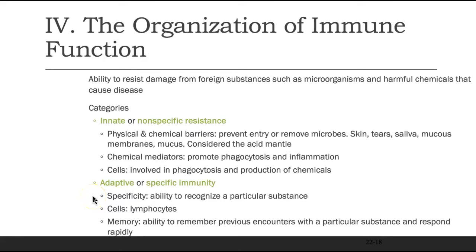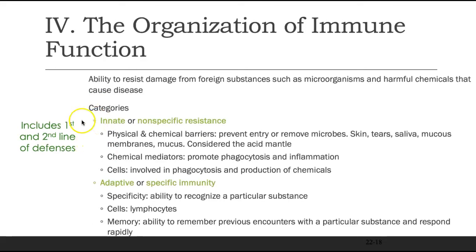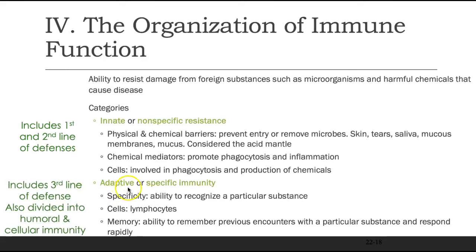Adaptive immunity is specific — it takes longer to tailor a response to a particular antigen or pathogen. The cells used are lymphocytes, also known as B and T cells, and we create an immunological memory: we remember a pathogen after the first encounter so that next time we respond very quickly. The innate immune system represents our first and second lines of defense, while adaptive immunity is the third line of defense, further subdivided into humoral immunity and cellular immunity.